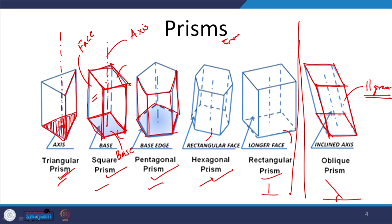A prism can be any type depending upon the base shape — from triangular to square, pentagon, hexagon, and now octagon as shown. It could be any type of prism and it will remain to be called a prism.